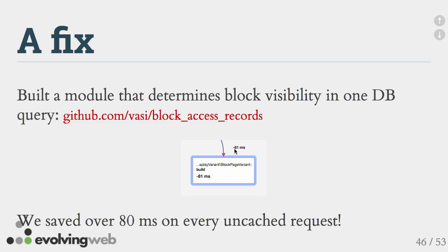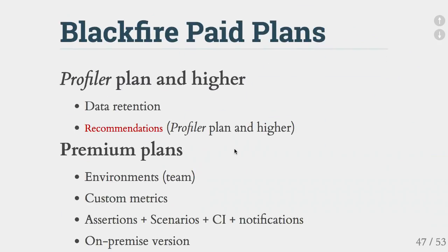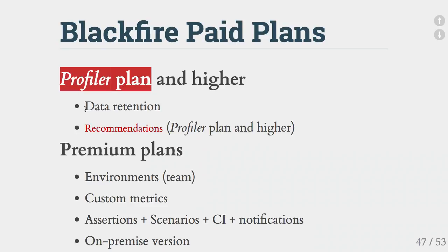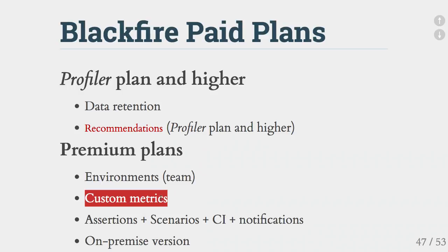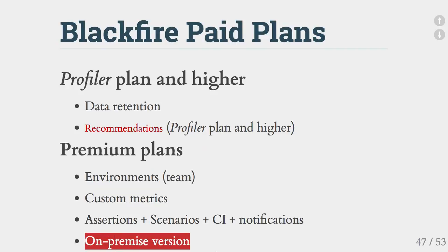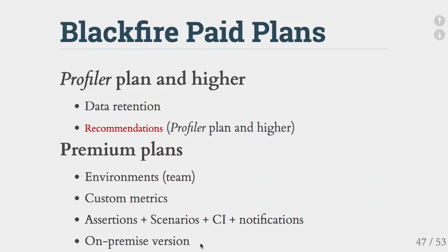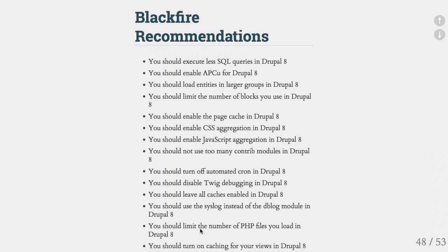That's a little screenshot of the diff profile. What you've seen so far is all free. Once you start paying — around $15 a month or so at the profiler plan — you get more data retention and access to recommendations, which Jigar will talk about. At the premium plan, you get multiple team members, custom metrics, and you can integrate Blackfire runs with your CI system, with Slack integration. Pay enough and they'll even let you run your own hosted version.